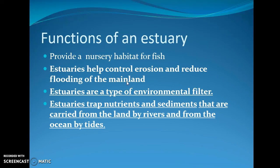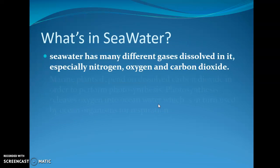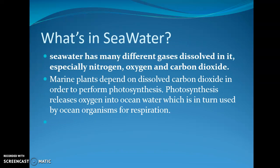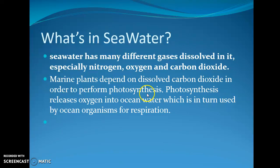We then looked at the functions of an estuary: controlling erosion, filtering and trapping nutrients and sediments, which end up being food for a lot of organisms. Inside the seawater, we do have lots of gases. The three most important gases are nitrogen, oxygen, and carbon dioxide. Marine plants like phytoplankton depend on carbon dioxide to do photosynthesis — where they combine carbon dioxide, water, and energy from the sun to make their food — but they also give up oxygen, which is important for all animals to breathe.